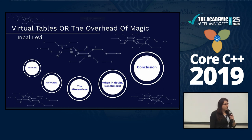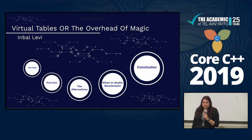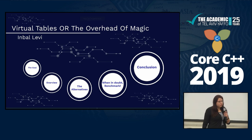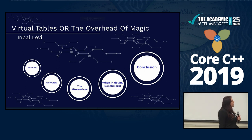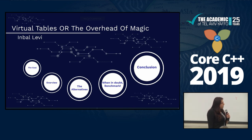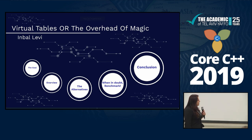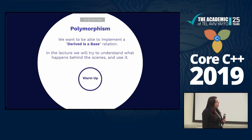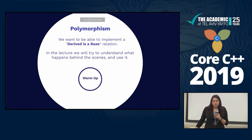Then I'm going to do an overview of the structure. I'm going to look at some alternatives to virtual tables that can actually have polymorphism in our code. Then I'm going to show you some benchmarking that I did, and we'll conclude. The goal of virtual tables is actually to have polymorphism.